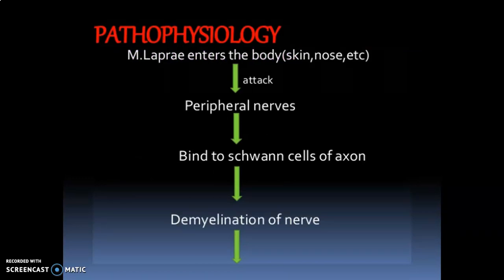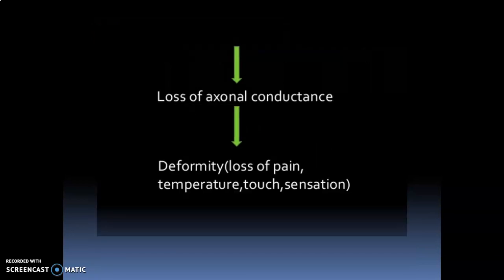Next is the pathophysiology of Leprosy. Mycobacterium leprae enters the body, attacks peripheral nerves, and binds to Schwann cells causing axonal demyelination of nerves, leading to loss of axonal conductance, deformity, and loss of pain and temperature sensation.